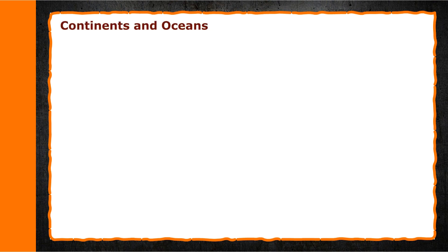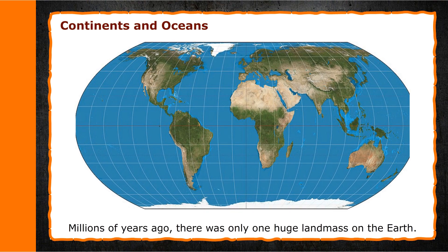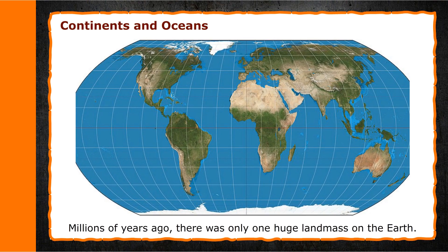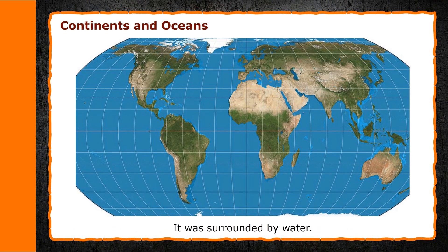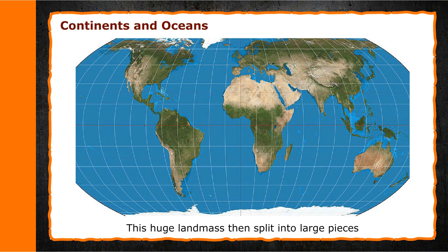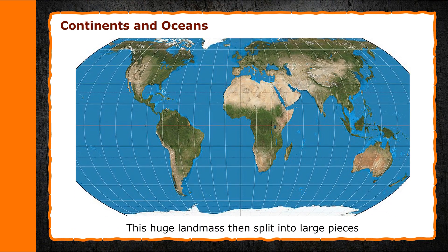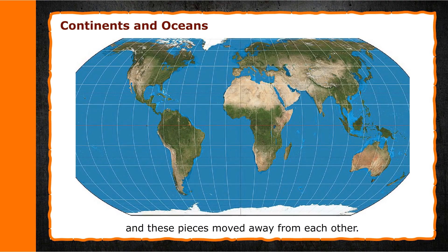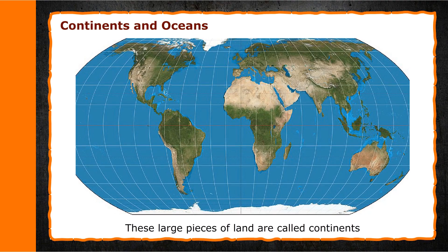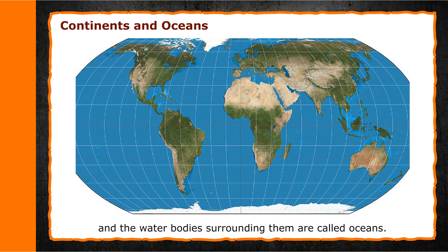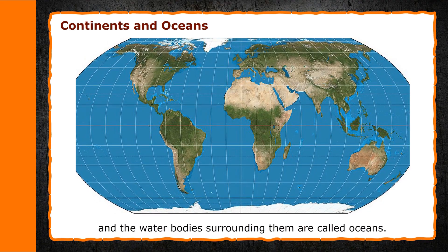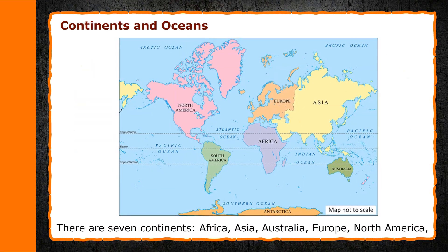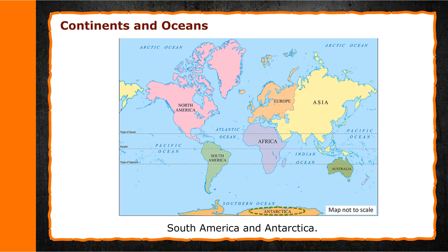Continents and Oceans. Millions of years ago, there was only one huge landmass on the earth, surrounded by water. This huge landmass then split into large pieces and these pieces moved away from each other. These large pieces of land are called continents and the water bodies surrounding them are called oceans. There are seven continents: Africa, Asia, Australia, Europe, North America, South America and Antarctica.